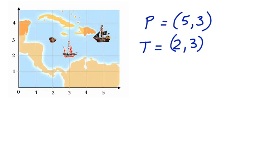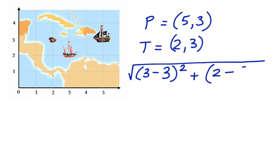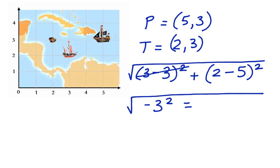Now let's use the distance formula. y2 coordinate is 3 minus the y1 coordinate squared plus the x2 coordinate minus the x1 coordinate squared. This cancels here. 2 minus 5 is negative 3 squared, which is equal to 9. The square root of 9 is equal to 3. So we can say that the pirate ship is 3 units away from the treasure.